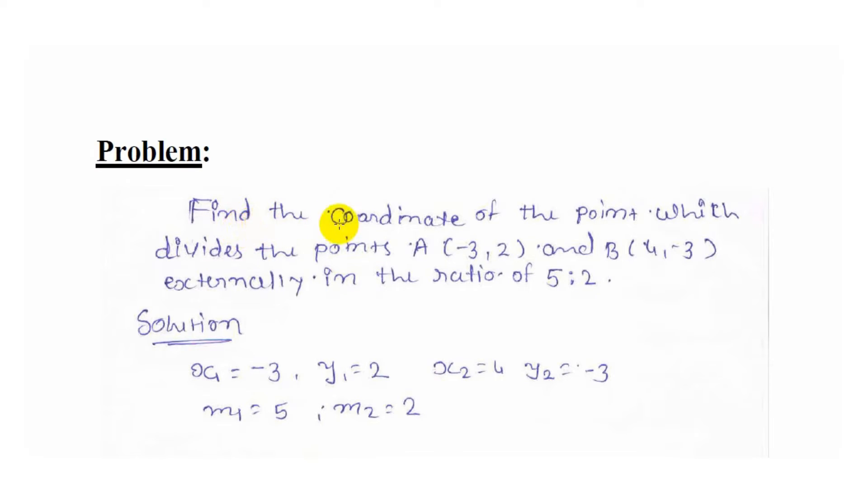Welcome friends, in today's video we learn how to find the coordinate of the point when the line is given and the ratio is also given. Our problem is: find the coordinate of the point which divides the points A(-3, 2) and B(4, -3) externally in the ratio of 5:2.